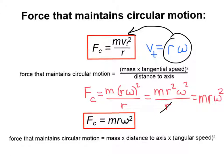And we end up with the force that maintains circular motion being equal to the mass times the distance to the axis times the angular speed squared. So this force is no different than any other force we've been talking about. It's measured in newtons. An example of this force will be the gravitational force exerted on the moon by earth. That is providing the necessary force to keep the moon in its orbit.